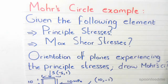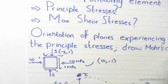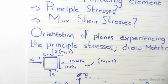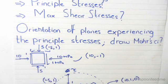The following is a Mohr's Circle example. Given the following element, we need to work out the principal stresses σ₁ and σ₂, the maximum shear stresses, the orientation of the plane experiencing the principal stresses, and finally draw Mohr's Circle.